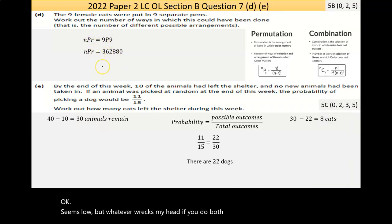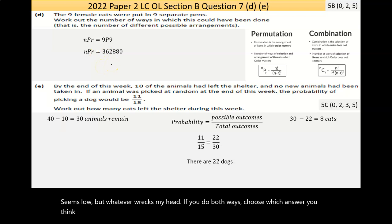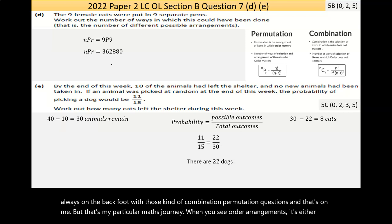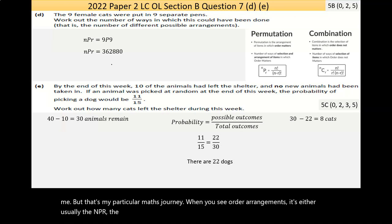If you did it both ways, choose which answer you think makes most sense. That's the strategy. Obviously, knowing the answer. But again, I'm always on the back foot with those kind of combinations, permutation questions. And that's on me. But that's my particular maths journey. When you see order or arrangements, it's either usually the NPR or the NCR. But in this case, the order matters. And that's why it's a permutation.